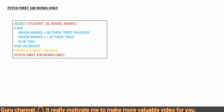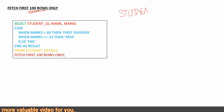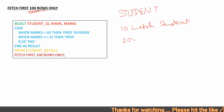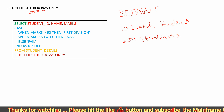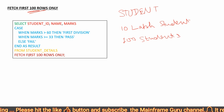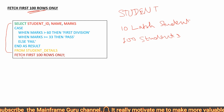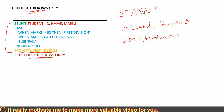For example, if you want to fetch only the first 100 rows from a table — say you have a student table with 10 lakh students but you only want the first 100 records — you can use 'FETCH FIRST 100 ROWS ONLY' in the SQL statement after the FROM student details clause.